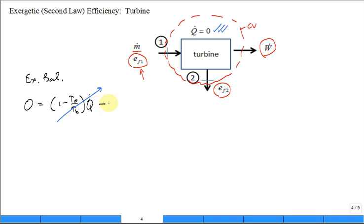Then we'll have minus W dot. That's the same right here. Then we'll have M dot times EF1 minus EF2, change in the flow exergy from inlet to outlet, minus the exergy destruction rate. Did I write that equation correctly? Look good?